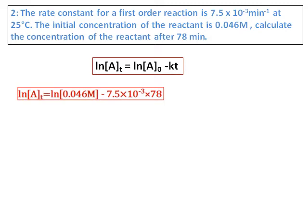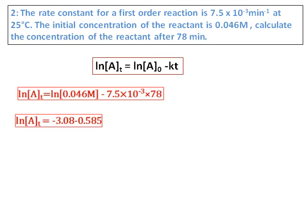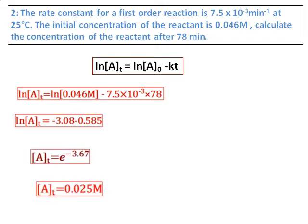Substituting into the equation, we get ln[A] equals ln(0.046) minus (7.5 × 10⁻³)(78). Note that k and time are kept in units of minutes, so no conversion to seconds is needed. Solving, the ln of the concentration of A at t comes as negative 3.67. To get the actual concentration, we take the exponential: concentration of A at t equals e^(−3.67), which gives 0.025 molar.